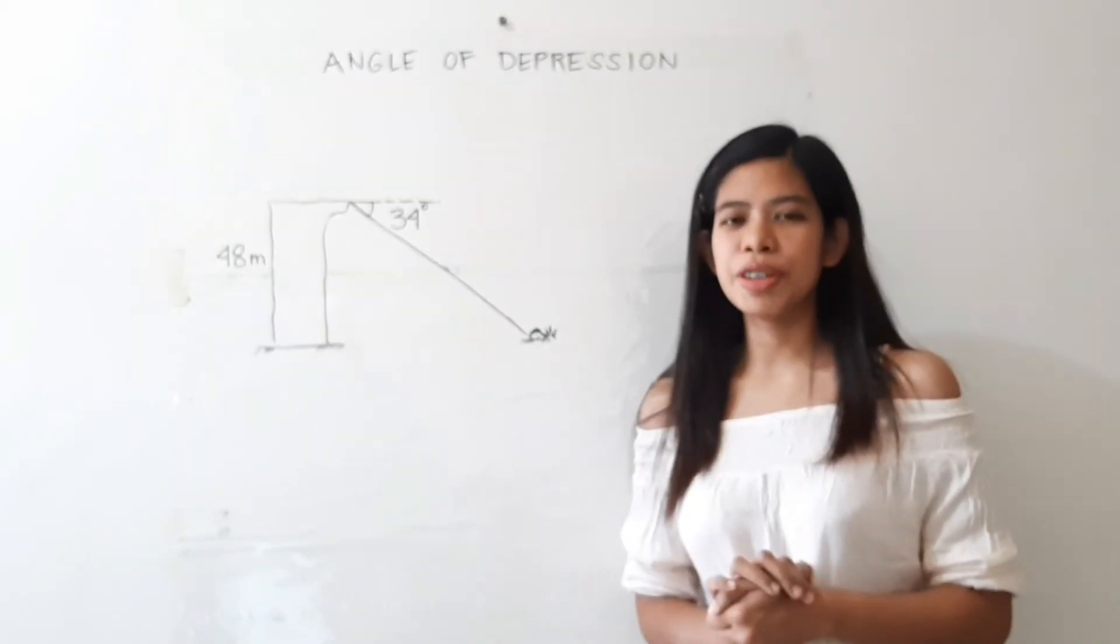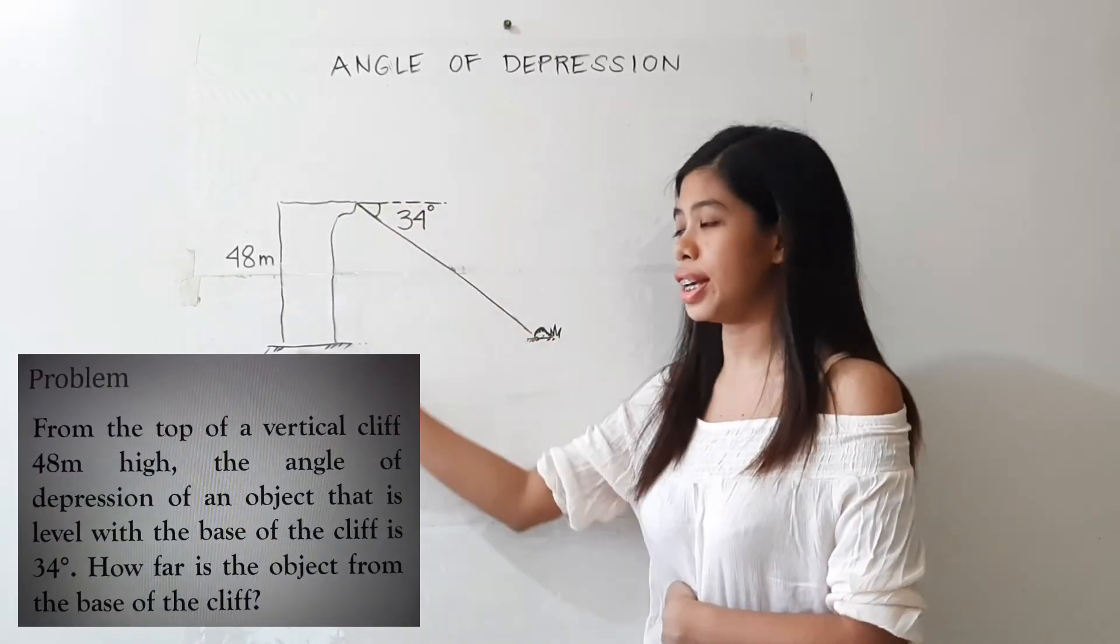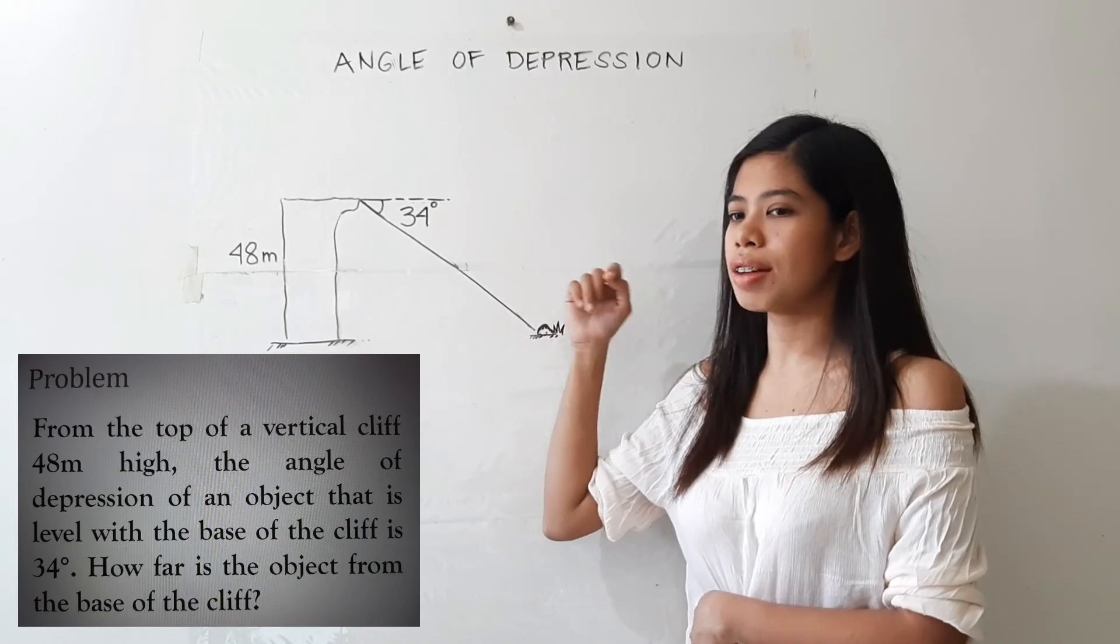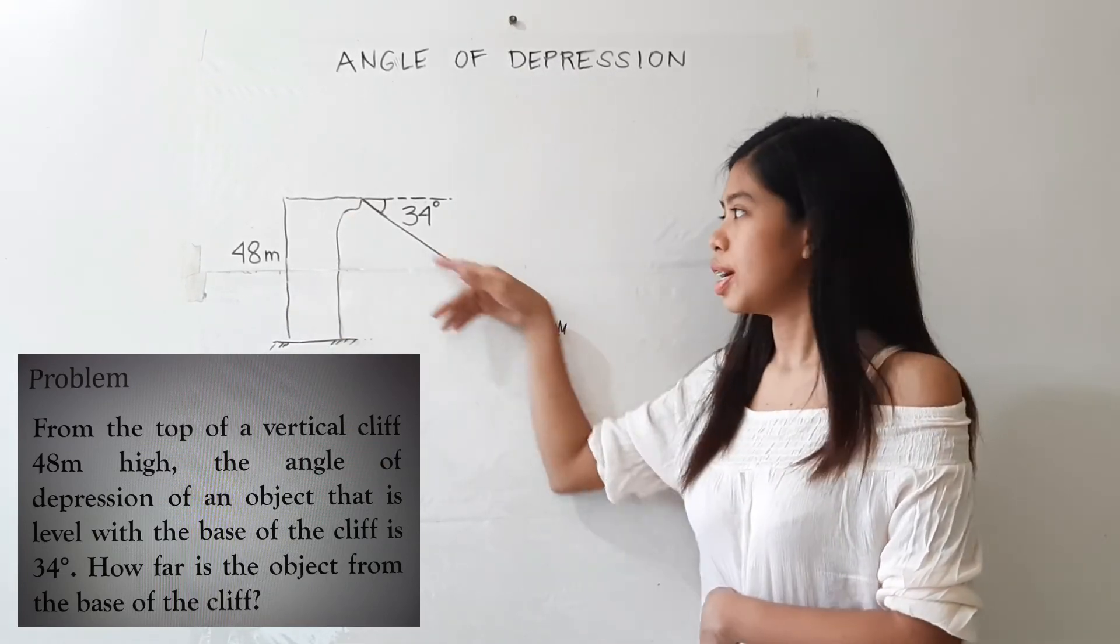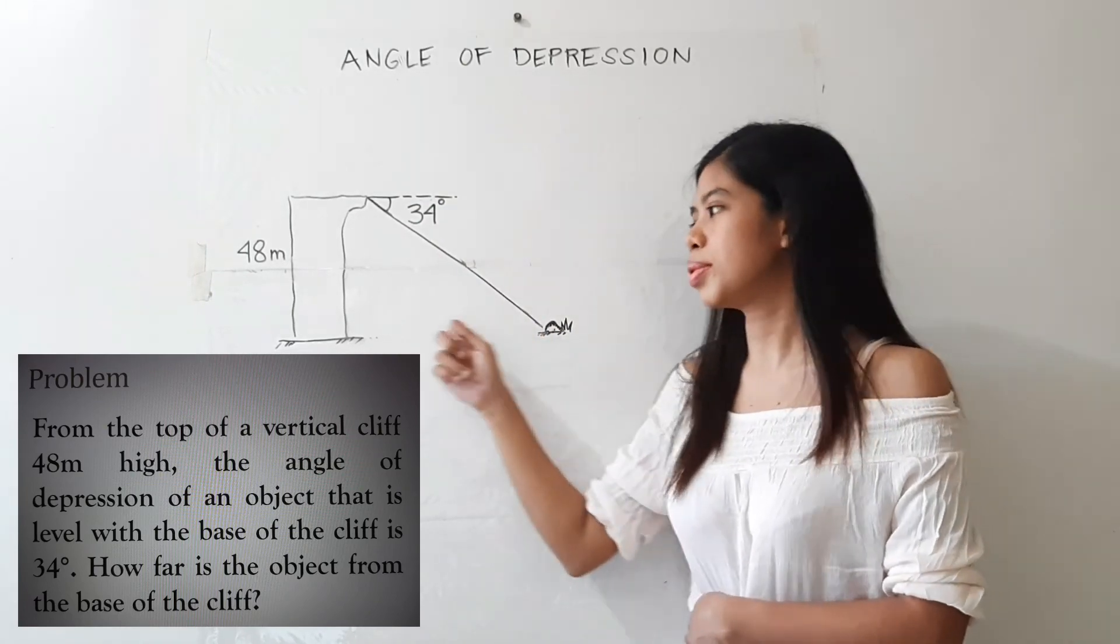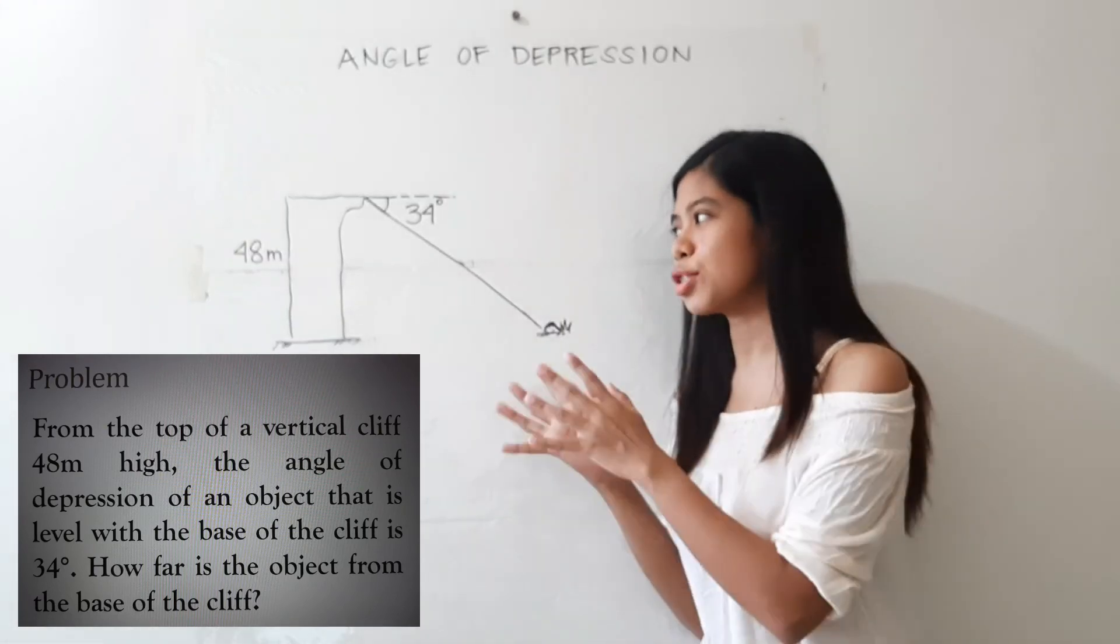So once again, I'm leaving you an activity. From the top of a vertical cliff 48 meters high, the angle of depression of an object that is level with the base of the cliff is 34 degrees. How far is the object from the base of the cliff? So I hope you are going to spend some time solving this problem.